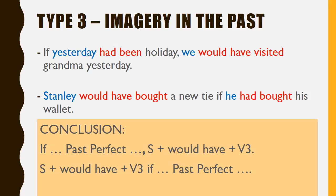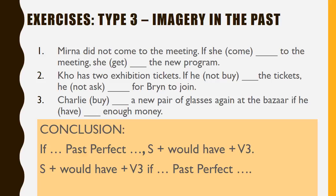Type 3 — Imaginary in the Past. Examples: 'If yesterday had been a holiday, we would have visited grandma yesterday' and 'Stanley would have bought a new tie if he had brought his wallet.' From these examples we can conclude that past perfect is used in the if-clause, combined with would have plus verb 3 in the main clause. Now do the exercises for Type 3.